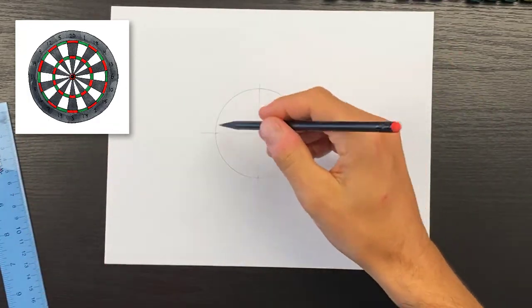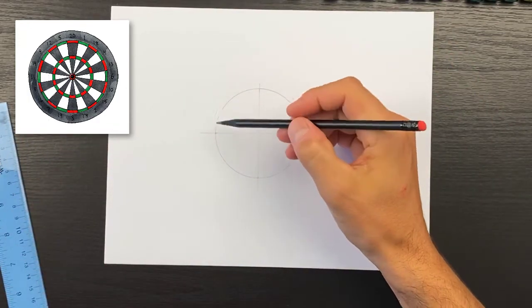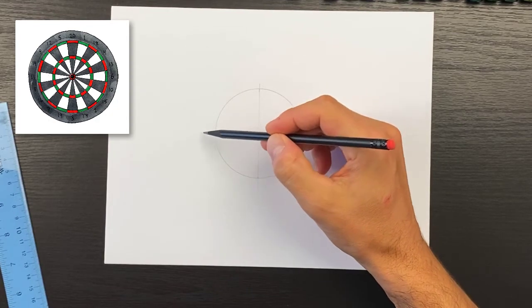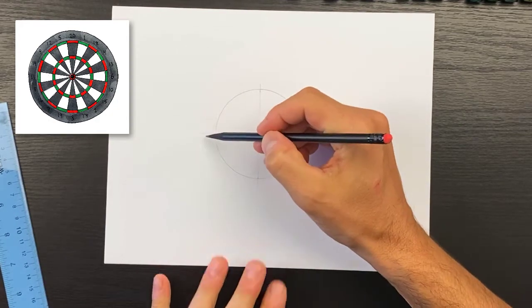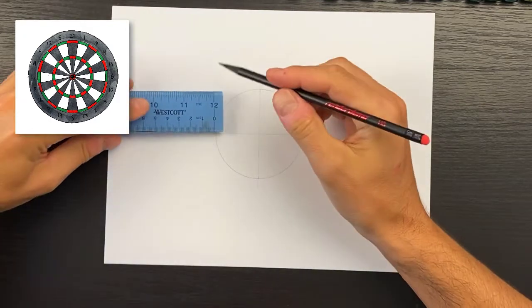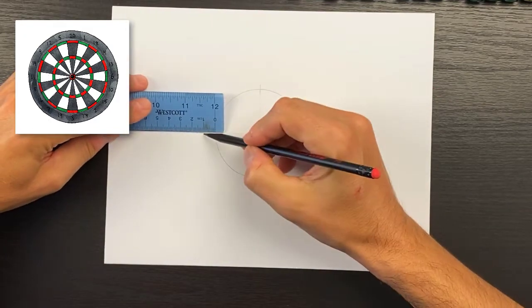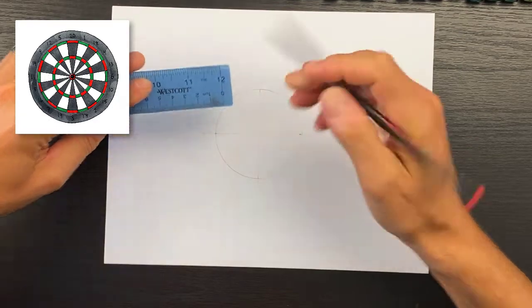This will be my first inner ring, so I'm going to go outside of that. If you have a ruler you can go in and measure. I'm just going to do one centimeter away.